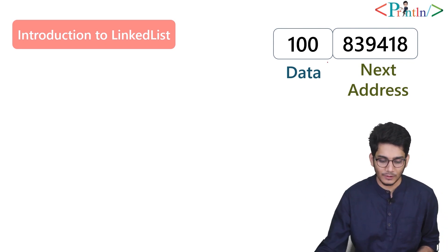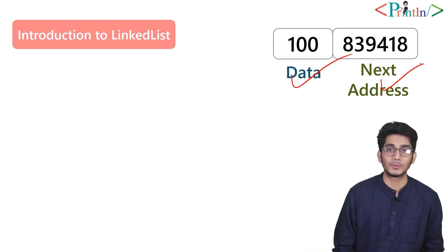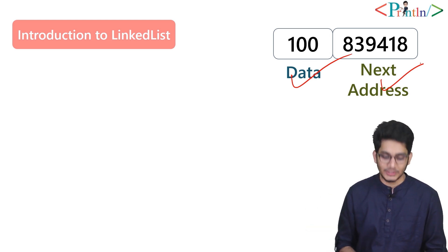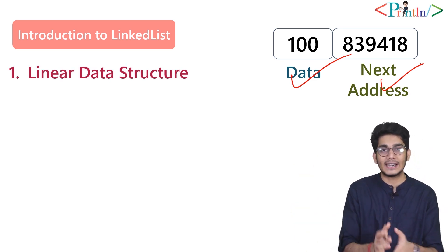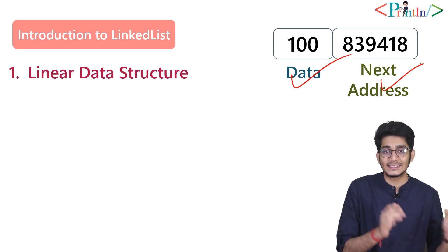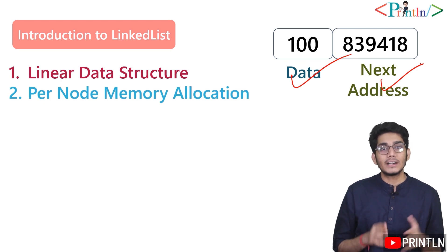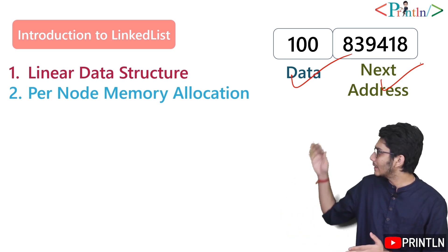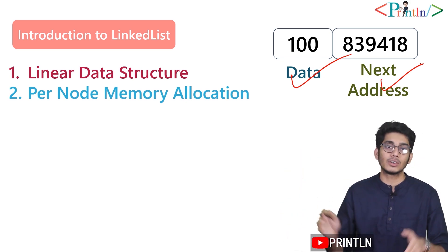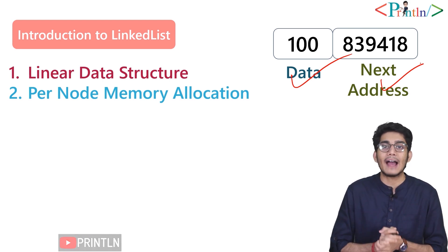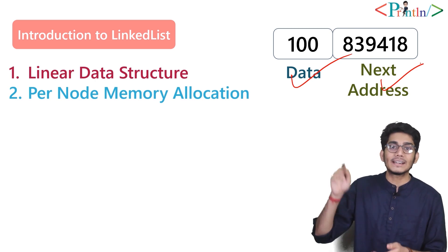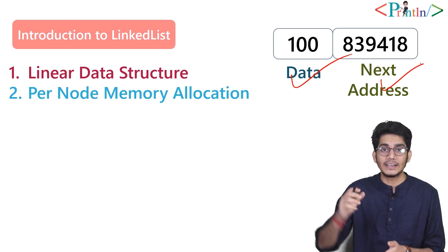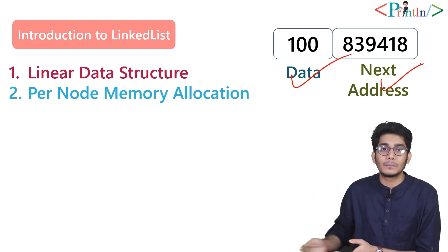As you can see on my screen, we have one data portion and one next address portion. Linked list is a linear data structure — just like arrays — but linked list has its own properties. Linked list is a per-node memory allocation. In an array you have to allocate a block of memory all at once, but in linked list we allocate memory dynamically, node by node.